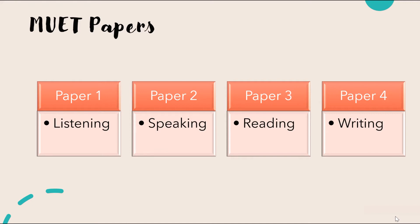Once you are successfully registered for MUET, you can download the examination slip from the MEC portal by typing in your IC number. The other three papers — Reading, Writing and Listening — are going to be held about a week or two after the Speaking paper, and it is going to be on a Saturday. All three papers will be held together with short intervals in between. It will start with the Reading paper, then Writing, and the last paper for the day will be the Listening paper. You need to know these two dates and remember them.